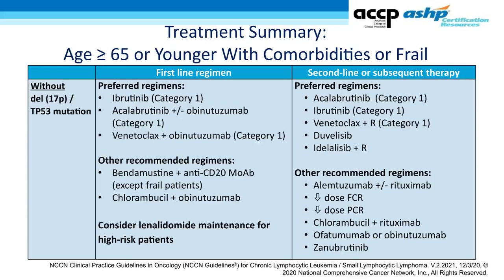For slow-go patients (≥65 years old, or younger with comorbidities) and no-go (frail) patients — all without deletion 17p — there are three Category 1 first-line recommendations: ibrutinib, acalabrutinib plus or minus obinutuzumab, and venetoclax plus obinutuzumab. FCR is no longer recommended for these patients. At relapse, preferred regimens include acalabrutinib, ibrutinib, and venetoclax plus rituximab (all Category 1), along with the PI3K inhibitors duvelisib and idelalisib.